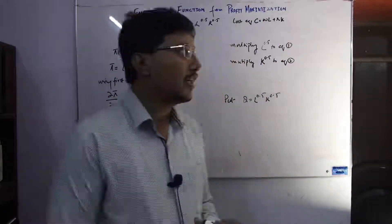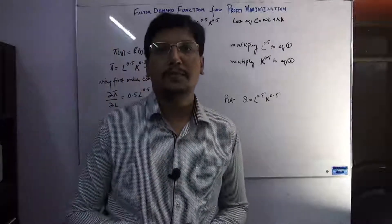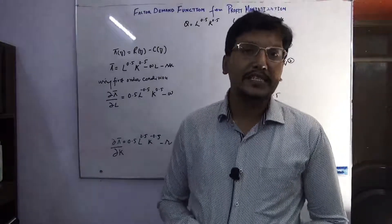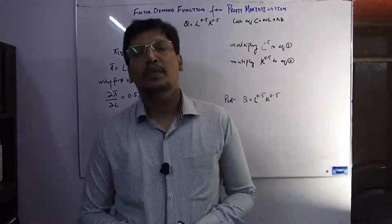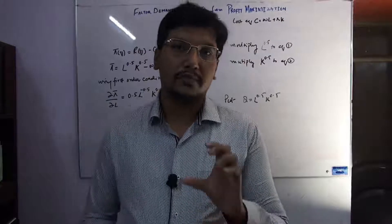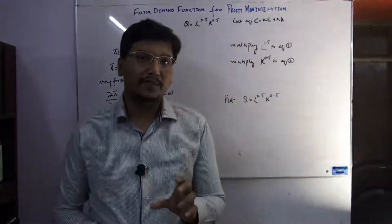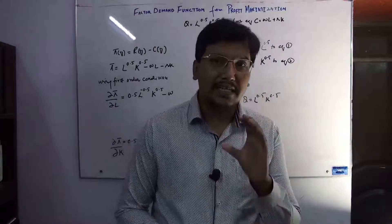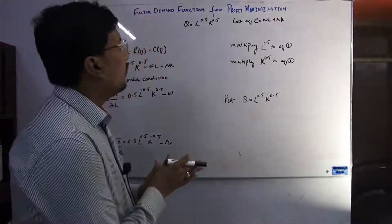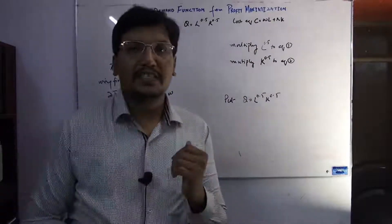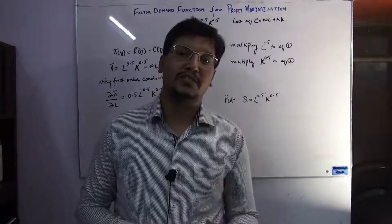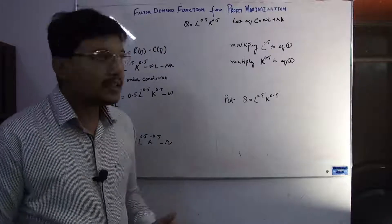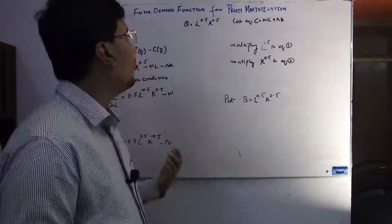Today we are going to discuss the factor demand function from the profit maximization approach. Earlier we discussed the contingent or conditional factor demand function, which was based on the cost minimization approach — meaning we were given the condition of minimizing cost. Here we are not giving any condition; we are simply asking at which condition profit maximization occurs. That is why it is called the unconditional factor demand function.